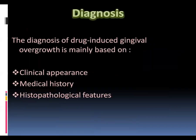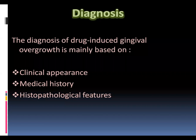Diagnosis of drug-induced gingival enlargement is mainly based on clinical appearance, medical history, and histopathological features. However, we can't always take histopathology in clinical work. The clinical appearance is very different from inflammatory enlargement. Medical history is important — at least 40% of people have hypertension after age 40, so we should check if they are taking calcium channel blockers, how long they've been taking them, and the patient's oral hygiene.